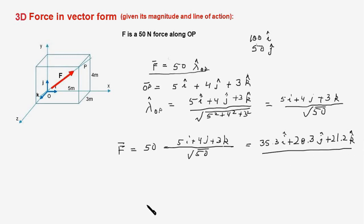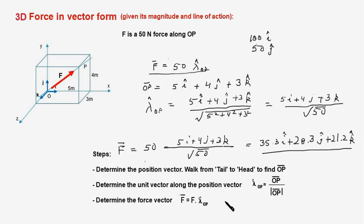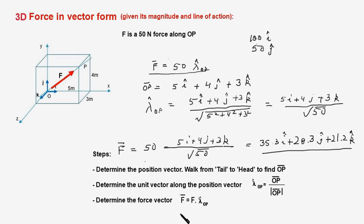Since this method is so important, let's take a quick review of the steps. The first step is to determine the position vector — walk from tail to head, in the direction of the force. The second step is to determine the unit vector along the position vector by dividing it by its magnitude. The force vector then equals the given magnitude times that unit vector.